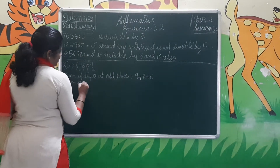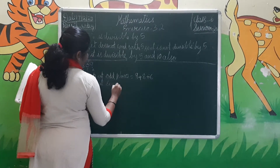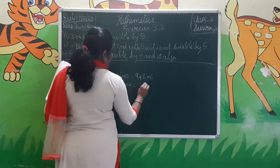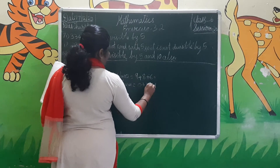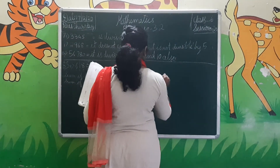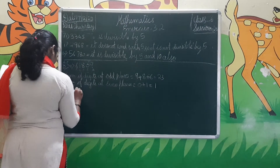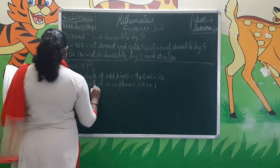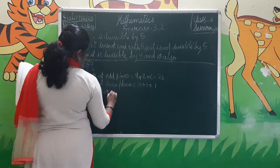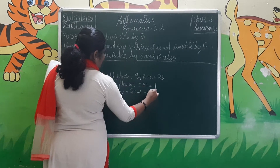Sum of even-place digits: the digits in the even places are 0 and 1. So 0 + 1 = 1. Now find the difference of the two sums: 23 − 1 = 22.